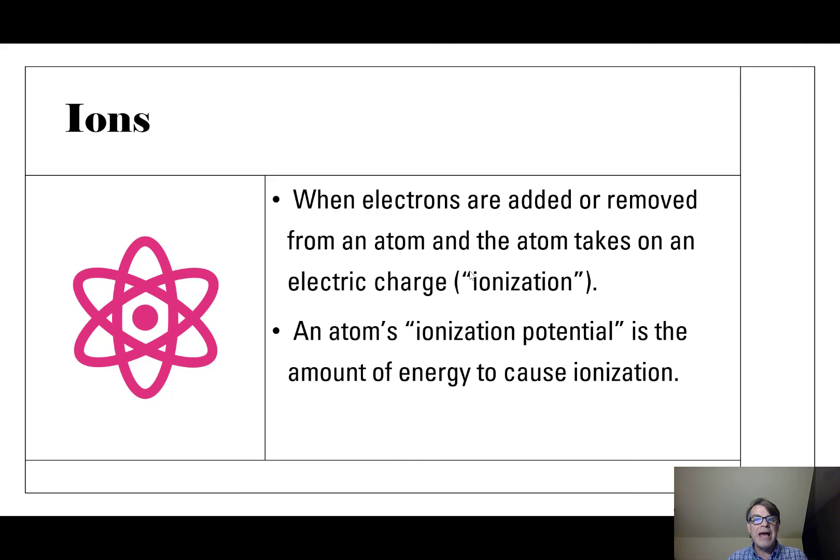Now what we call an atom's ionization potential, that's the amount of energy it takes to dislodge or to gain electrons. Some atoms tend to gain electrons, some tend to give away electrons. Copper is one that tends to give away electrons, so copper becomes either plus one or plus two.